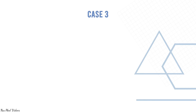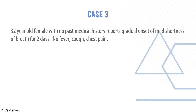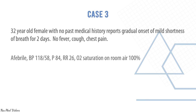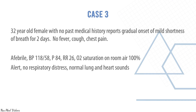Case three: a 32-year-old female with no past medical history reports gradual onset of mild shortness of breath for two days. No fever, cough, or chest pain. Afebrile, blood pressure 118/58, pulse 84, respiratory rate 26, O2 saturation on room air 100%. Alert, no respiratory distress, normal lung and heart sounds.